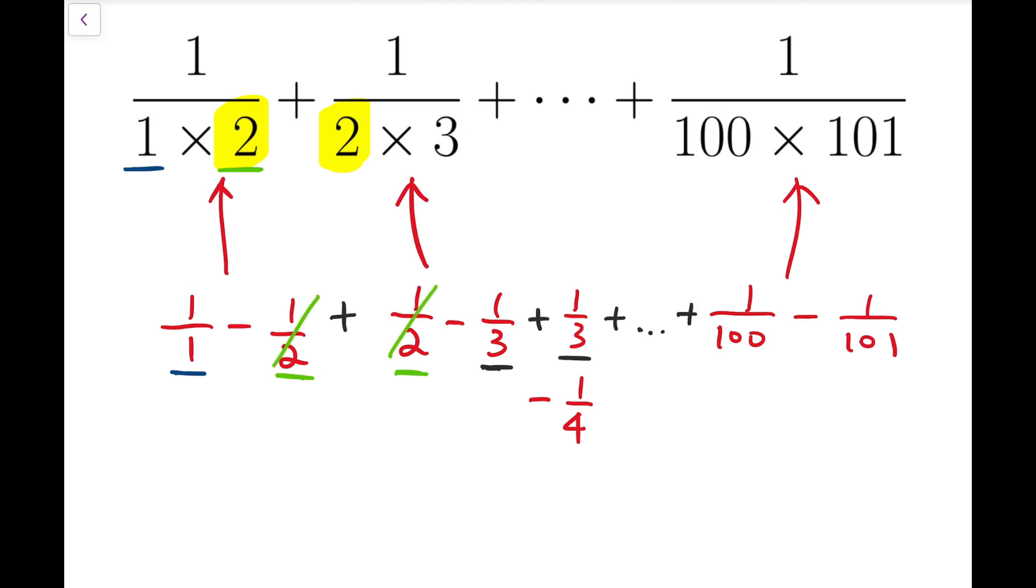And in fact, we can keep canceling until the end, and in fact this fraction 1 over 100 will also be canceled out, because supposedly there should be another fraction at this front, which is minus 1 over 100, and after canceling so many terms, we'll only have 1 over 1 minus 1 over 101 at the end. And so we know that this sum is 100 over 101.